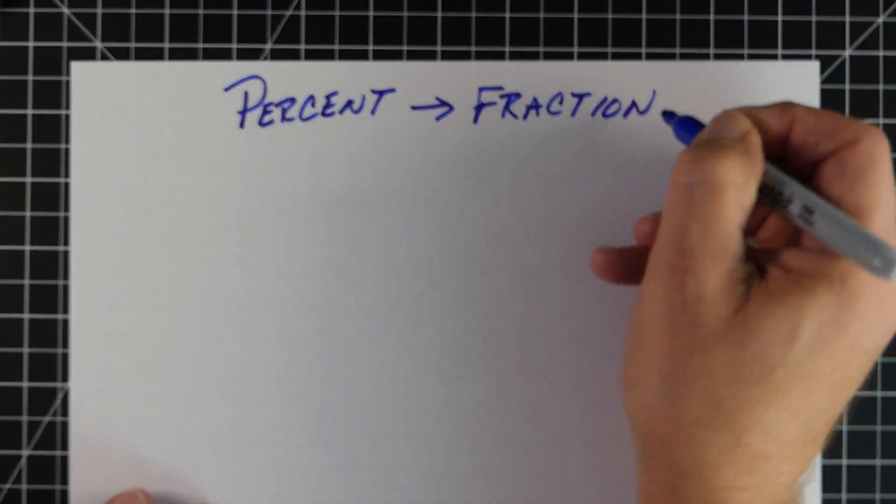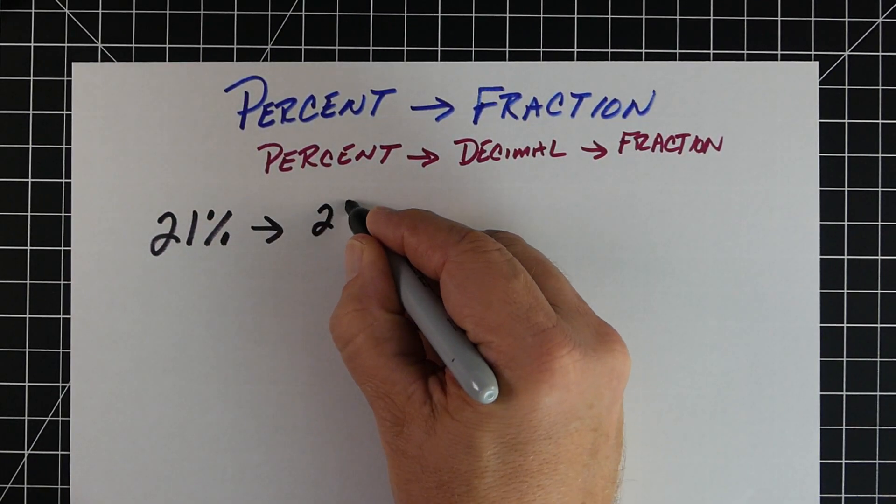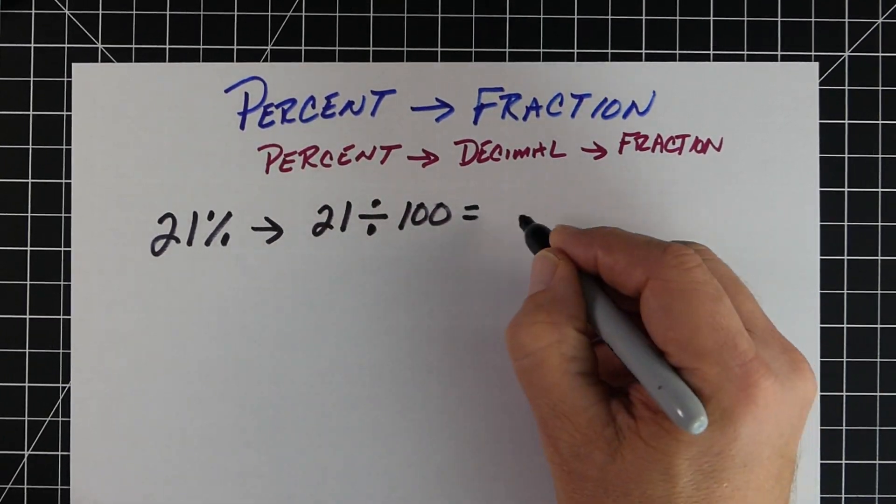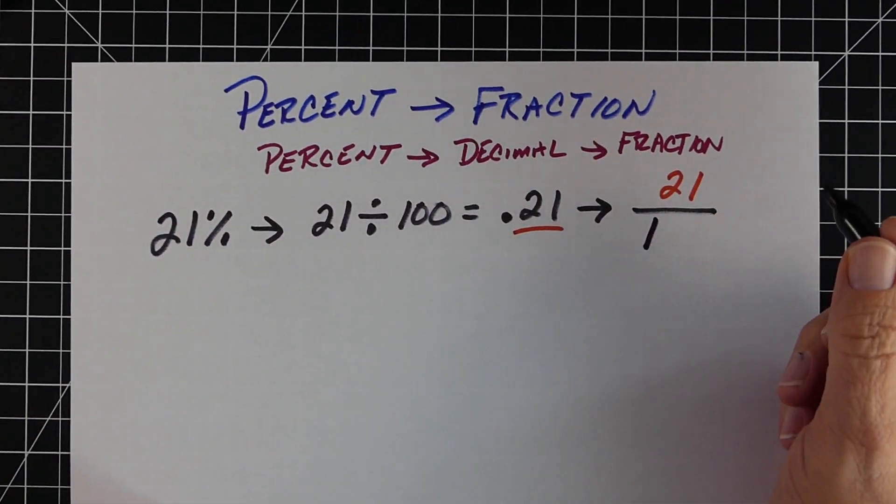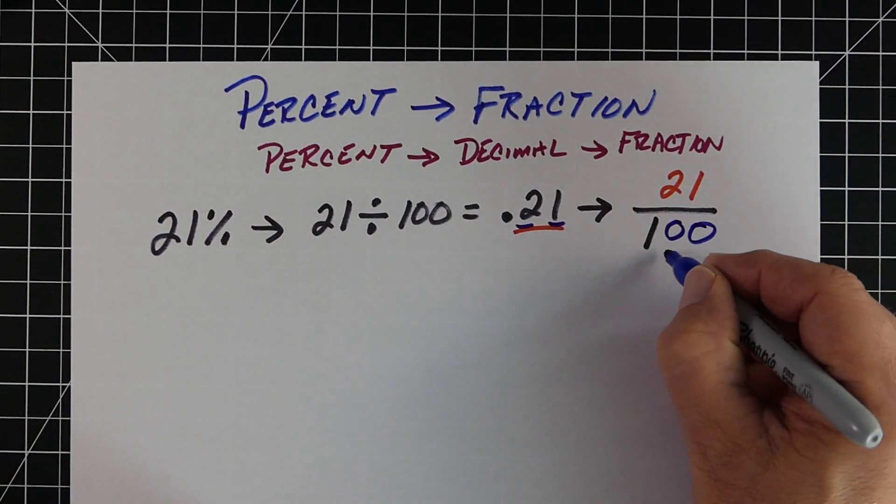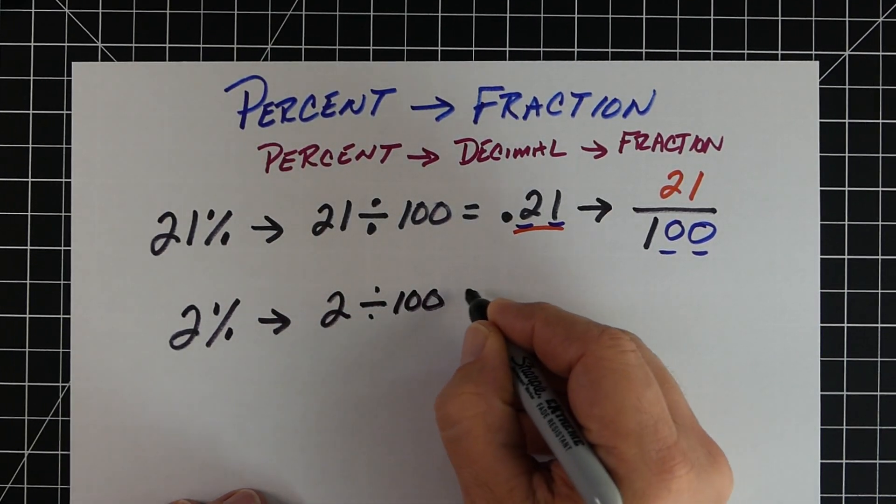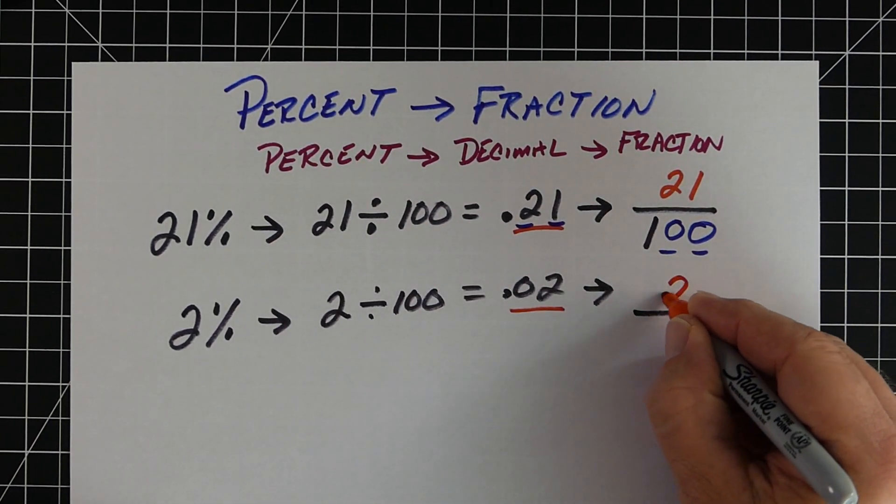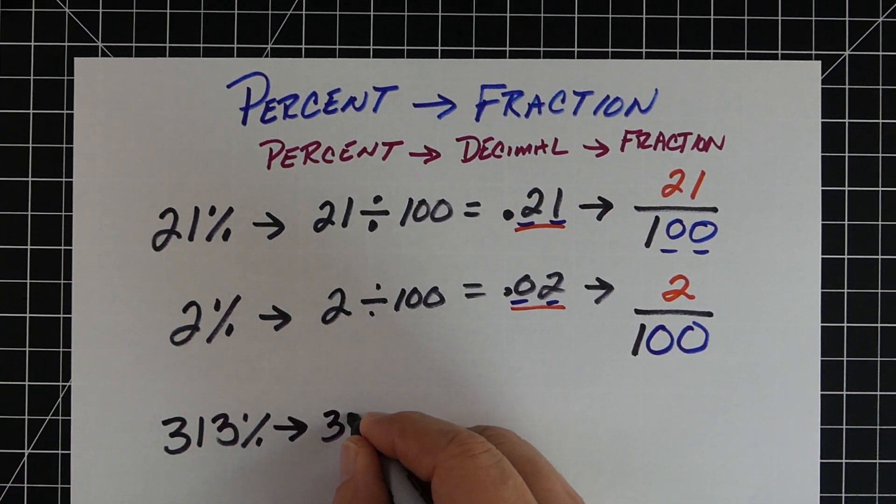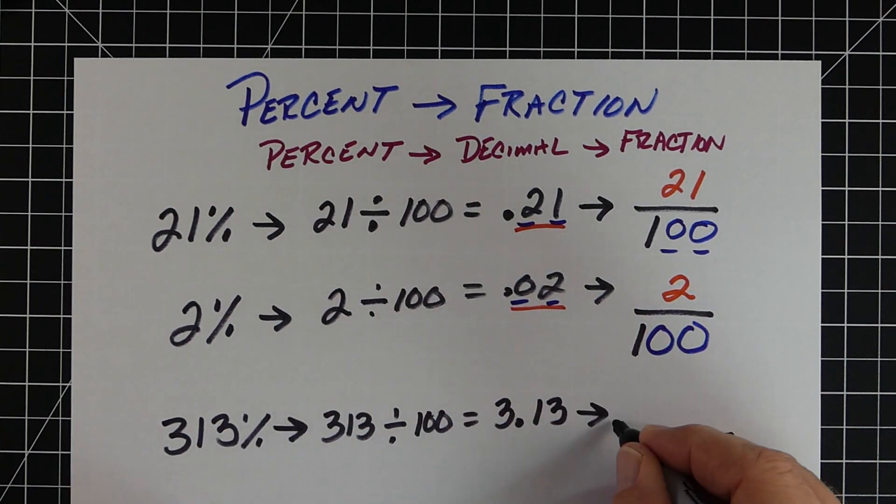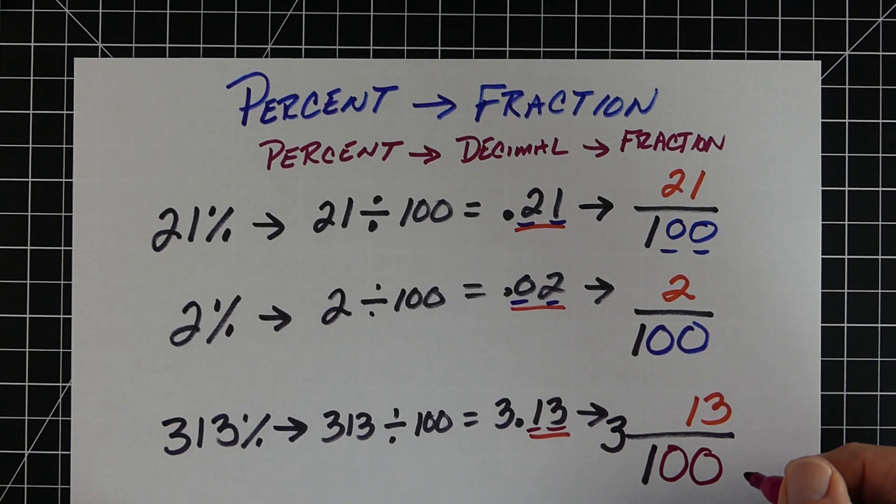Our next one - taking a percent, writing it as a fraction. Again, this is kind of a three-step process because we make our percent a decimal and then we're going to write it as a fraction. So 21% would be 21 divided by 100, which would be 0.21. When I go to make that a fraction, I put the 21 on top, I put a 1 in the denominator. There's two numbers to the right of the decimal, so I'm going to add two zeros. So it would be the fraction 21 hundredths. If it's 2%, I'm going to take 2 divided by 100. When I take 2 divided by 100, I'm going to get 0.02. I'm going to put the 2 on top, put the 1 in the denominator. I have two numbers to the right of the decimal again, so I'm going to add two zeros. Next one - 313%. I'm going to take that 313 divided by 100, I'm going to end up with 3.13. So my whole number is 3. I put 13 on top and I put 1 on the bottom. I add two zeros, so I end up with 3 and 13 hundredths.